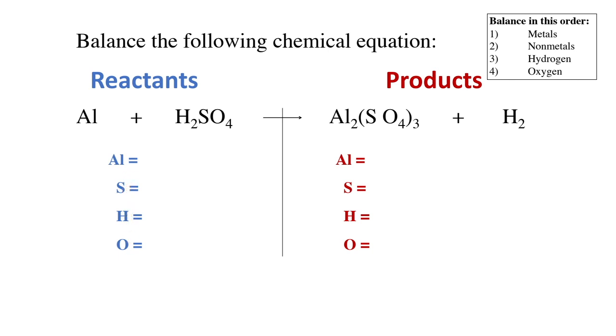Let's start with the amounts of the reactants. There's one aluminum, one sulfur, two hydrogen, and four oxygen. On the product side there's two aluminum, three sulfur because the three on the outside of the parentheses multiplies everything on the inside by three, two hydrogen, and twelve oxygen.